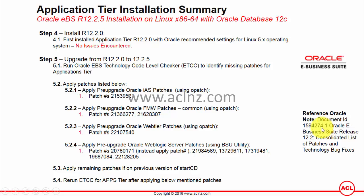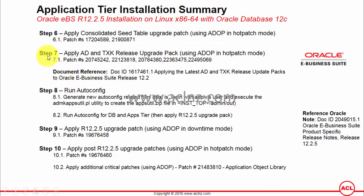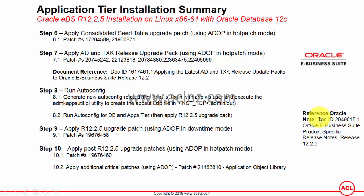Once that is done, move on to step number six: apply the consolidated seed table upgrade patch using ADOP in hot patch mode. This includes patch number 17204589 and 2190087. The details of this patch are provided in reference document ID 2049015.1 — Oracle E-Business Suite Product Specific Release Notes for Release 12.2.5.